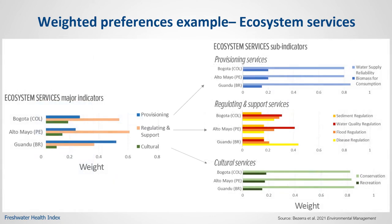This is another example of final results from a weighting exercise, showing groups of stakeholders in three different countries in Latin America: Brazil, Colombia, and Peru. You can see that different groups of stakeholders can give different preferences to different ecosystem services. For instance, stakeholders from Bogota, Colombia and Alto Maio, Peru are valuing regulating and supporting services much more relative to the other two groups, whereas in Guandu, Brazil, stakeholders are valuing provisioning services much more than the other two groups.